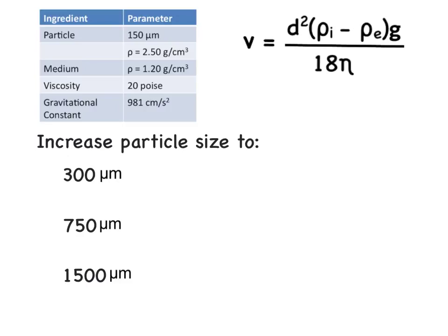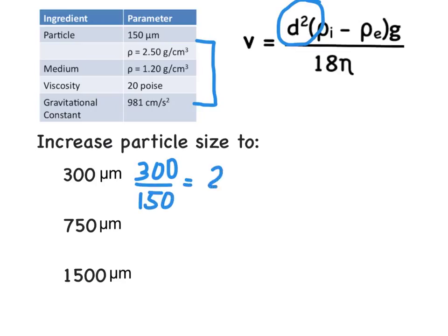We can also look at how particle size affects the rate of settling. Remember that the diameter parameter is squared in this equation. So if we hold all other parameters constant and go from a 150 micron particle to a 300 micron particle, that's a two-fold change in diameter. Squaring that, we would expect a four-fold increase in the rate of particle settling.